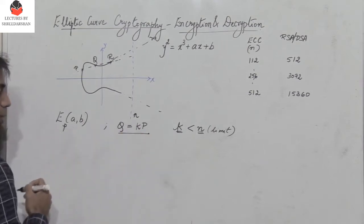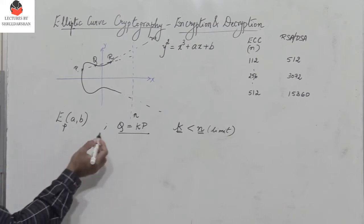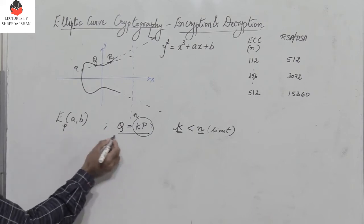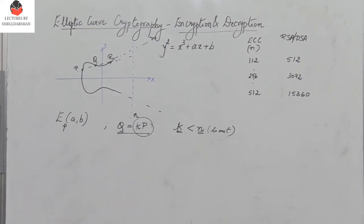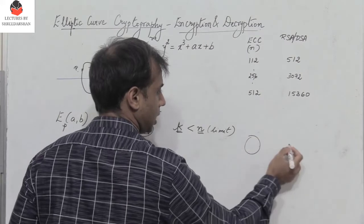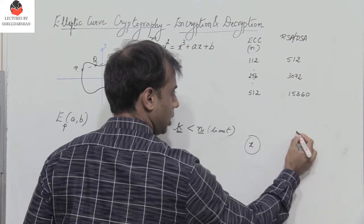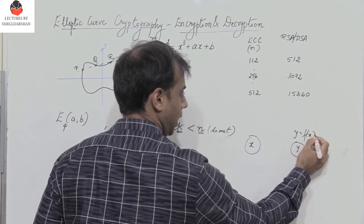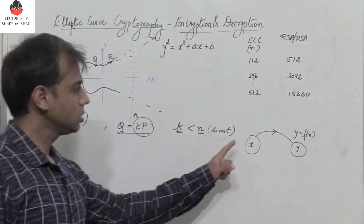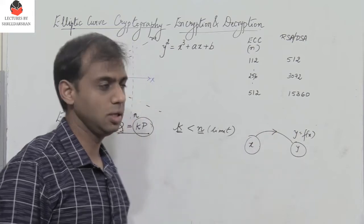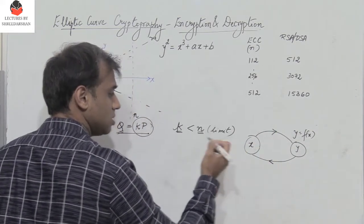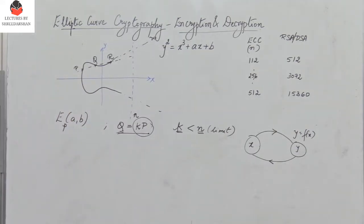If the two values P and k are given, it is easy to find the value of Q, but it is very difficult to find the value of k. This is called the discrete logarithm problem for elliptic curves. This concept is also referred to as a trapdoor function or a one-way function — given x it is easy to compute y = f(x), but computing x from y is a very hard problem.